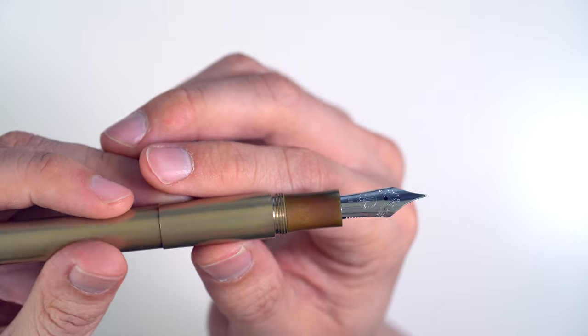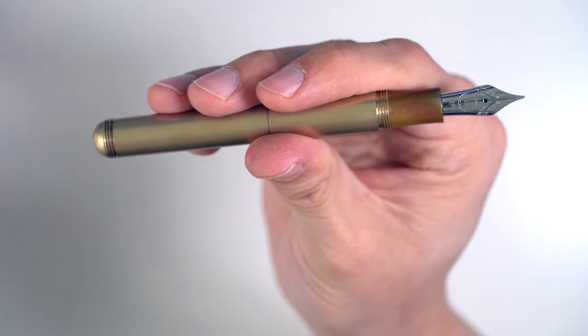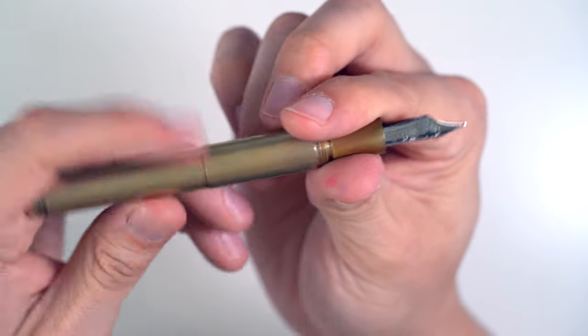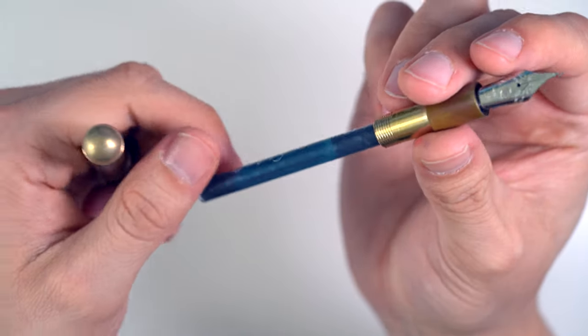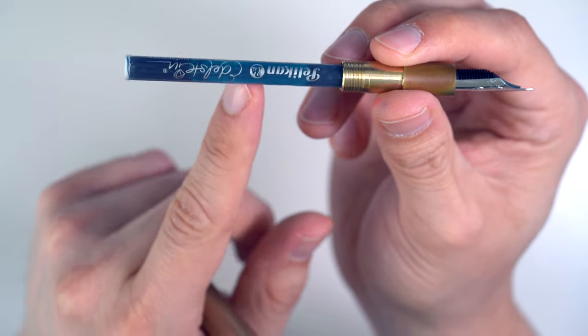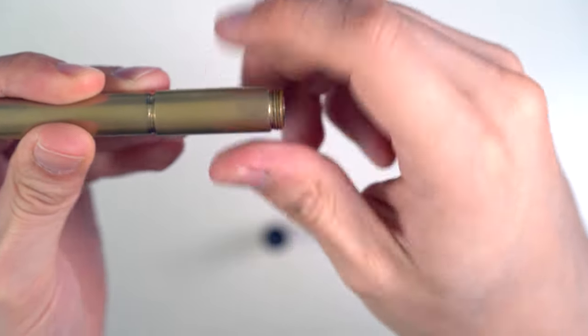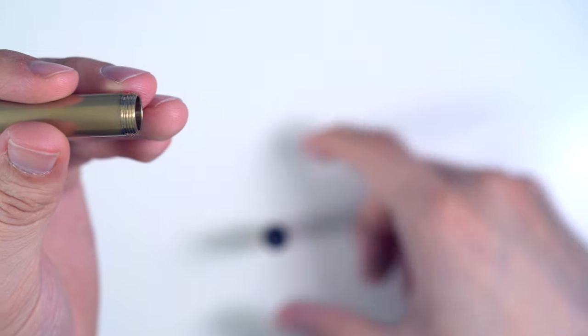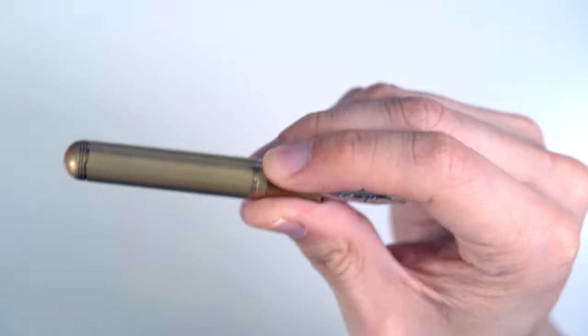And the other thing about this pen is that it takes a standard international cartridge. It does not come with the converter, at least mine didn't. This is a long international cartridge, but you can use a short one. And if you use a short one, I'm going to take this out without trying to make a mess. This part of the body here comes off, so you can change the length of the pen, essentially.